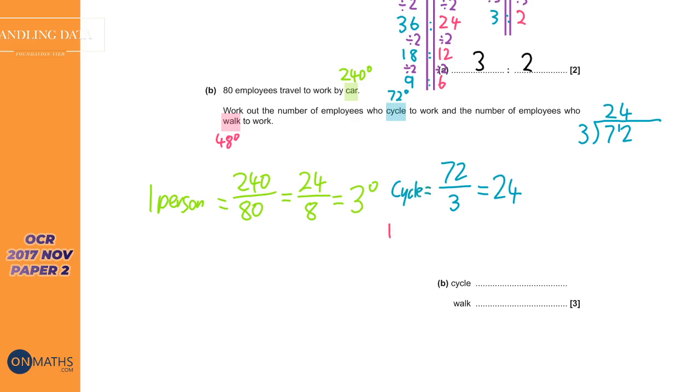And to do walk, we do the same thing. But it's 48 degrees and for each one of those degrees, or for each three of those degrees is one person. So we divide it by 3 and that's 16. Again, if you need to do a quick bus stop, 3s into 4 go once, carry the 1. 3s into 6, 16. There we are. So, cycle is going to be 24 people and walk is going to be 16 people.